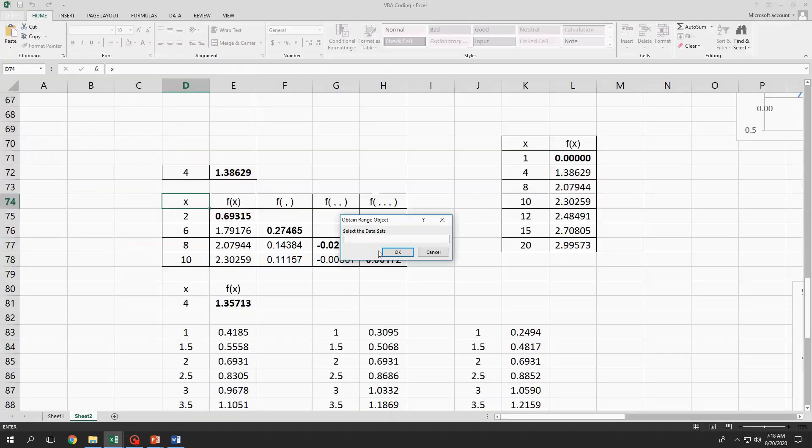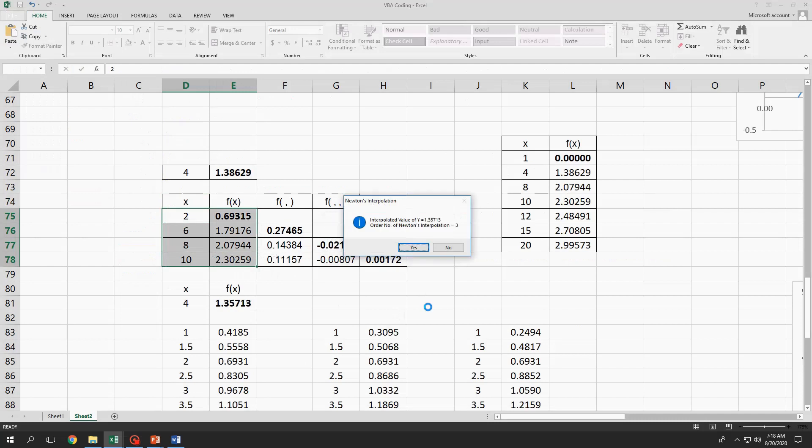So, if I run the code by pressing F5, it will ask me about the datasets as well as the x-coordinate and by clicking OK, it will immediately present to me the interpolated value of the function.